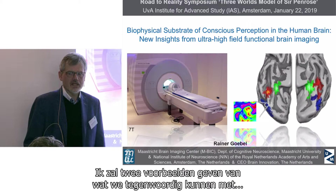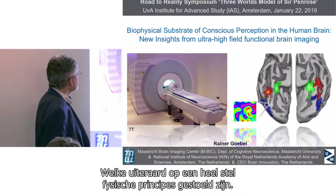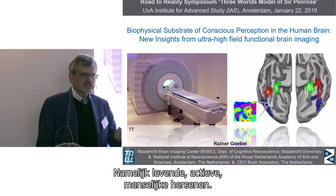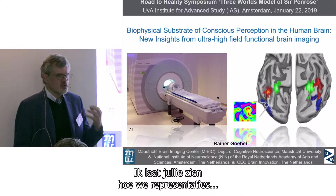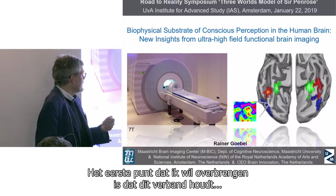It's a great pleasure and honor to be here at this outstanding symposium, and I want to thank the organizers, especially Hester Breman, for inviting me. I want to give you two examples of what we can do nowadays with very state-of-the-art machines—ultra-high-field MRI brain scanning devices—which are built on a lot of physical principles. We use these machines to probe a biophysical system, namely the living, acting human brain. I want to show you how we can study representations and underlying substrates of conscious perception using these machines in a very novel way.